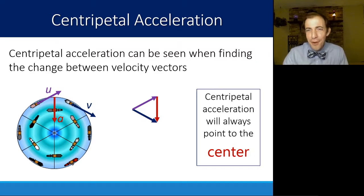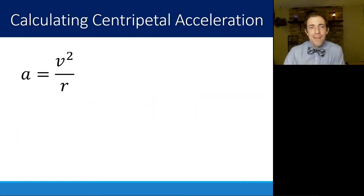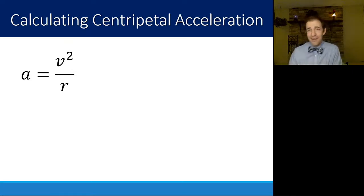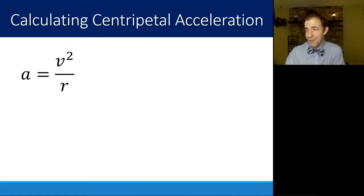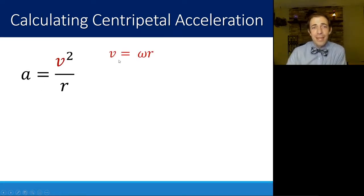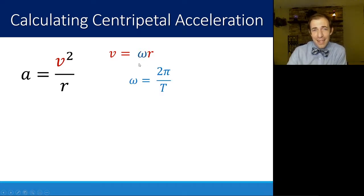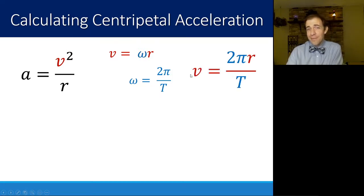Another way to know that acceleration points towards the center: acceleration always goes in the direction of the net force, and that force always draws us towards the center. With this equation for centripetal acceleration, we can define some other equations as well. In your data booklet you'll see several equations in the circular motion section. The linear velocity from the last video is just angular velocity times the radius, and angular velocity is 2π divided by T.